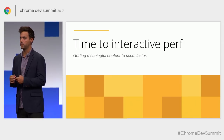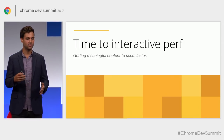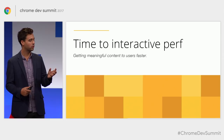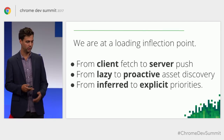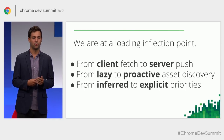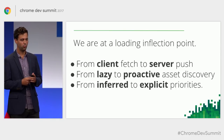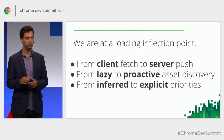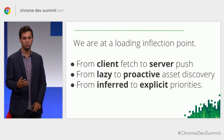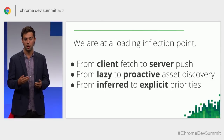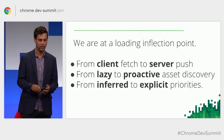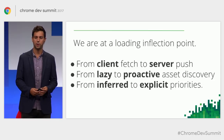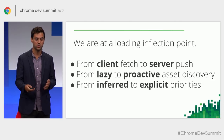With client conditions and dynamic imports, we can start delivering optimal performance across a multitude of client conditions — one solution won't have to fit every client. I think we are at a loading inflection point on the web. We're moving from a world where the client initiates fetches to one where the server pushes assets, from browser-discovered assets to developer-declared assets, and from inferred priorities to explicit priorities you as a developer can set.